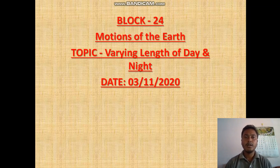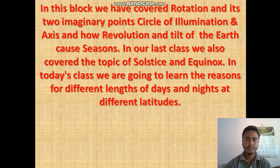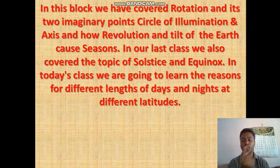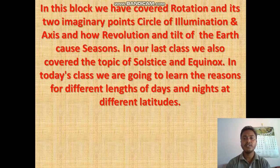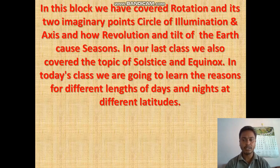Good morning, children. Here we are with our last lesson from block number 24. The topic is 'Varying Length of Day and Night.' In this block we have already covered rotation, the circle of illumination, and the axis. We also covered revolution, the tilt of the earth, seasons, and in our last class we covered solstice and equinox. Today we are going to learn the reasons for different lengths of days and nights — why we sometimes have longer days and shorter nights, and vice versa.